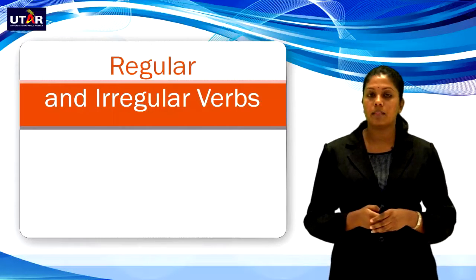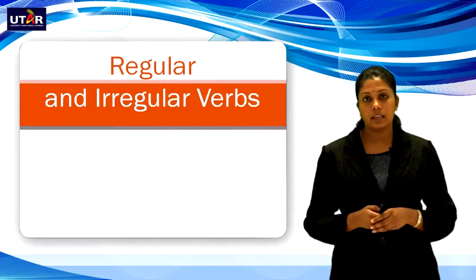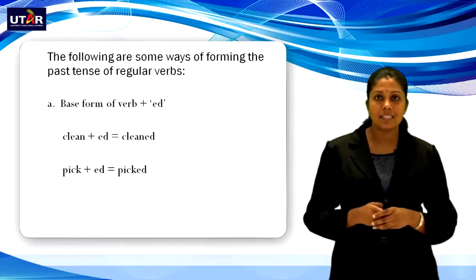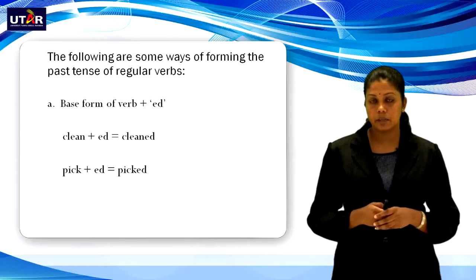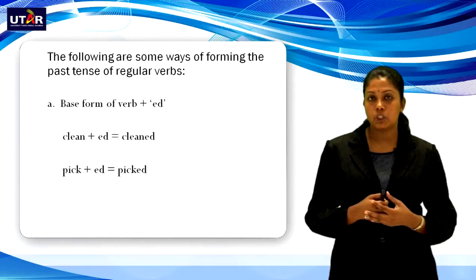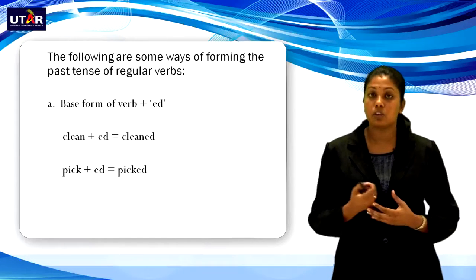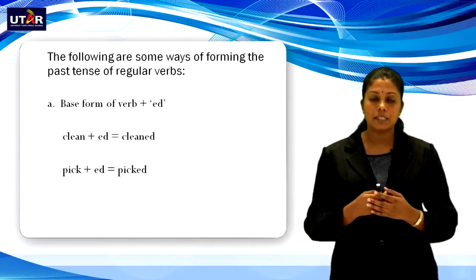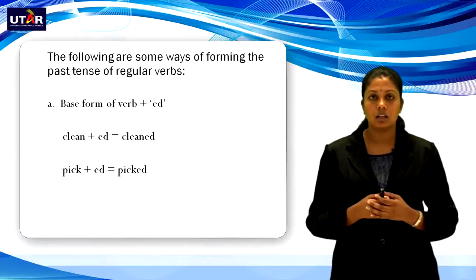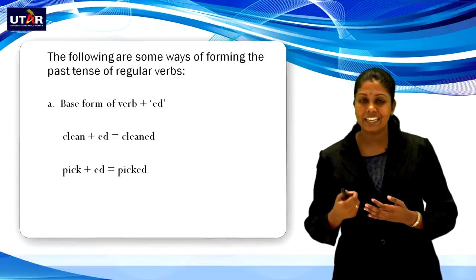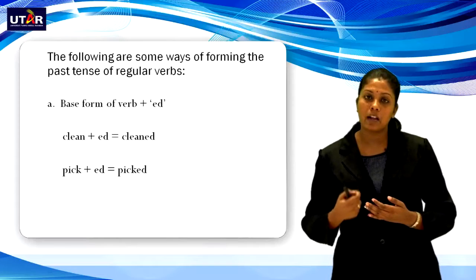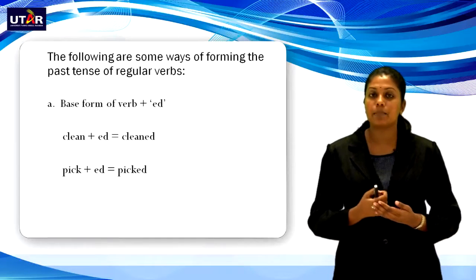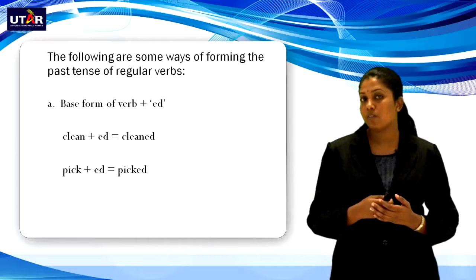For the past tense form, there are two types of verbs: regular and irregular. For regular verbs, the base verb should be joined with -ed. For example, clean — add -ed to it, it becomes cleaned. Picked is the past form of pick — you add -ed to pick to get picked.